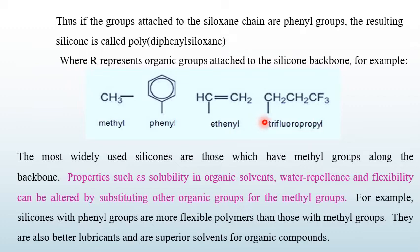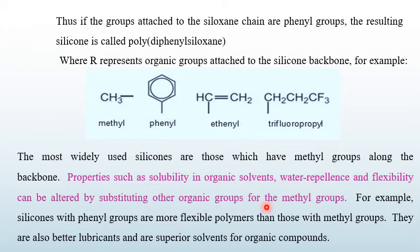Based on the R group, we decide the name of the polymer. The most widely used silicones are those which have methyl groups along the backbone. Properties such as solubility in organic solvents, water repellence, and flexibility can be altered by substituting other organic groups for methyl groups — by changing the alkyl group.